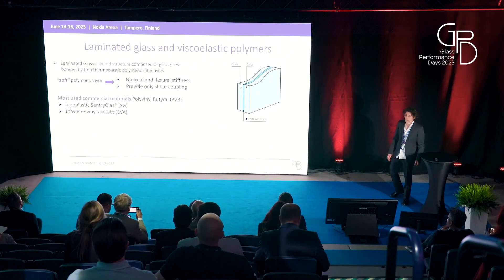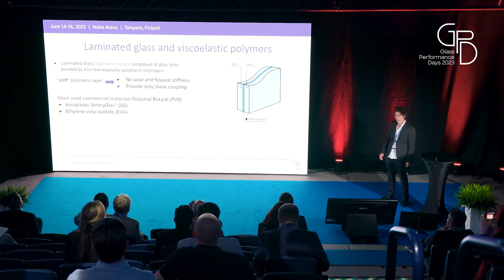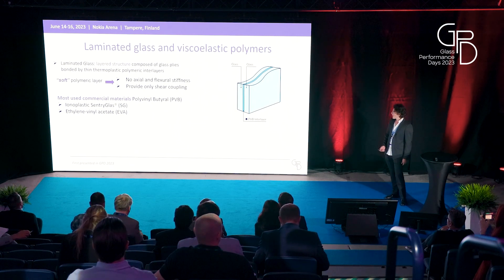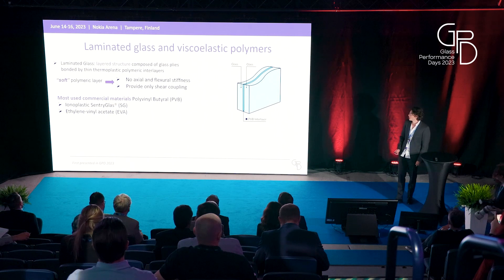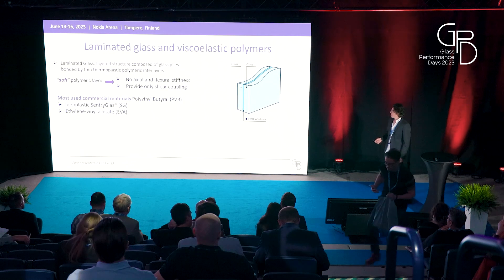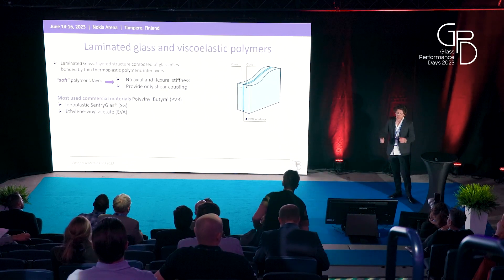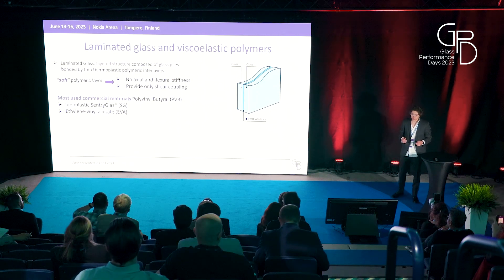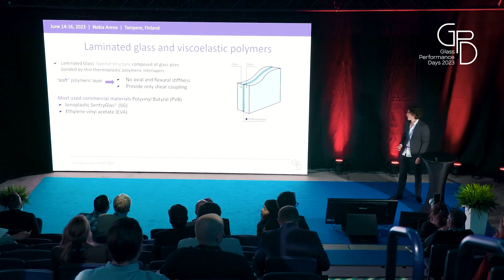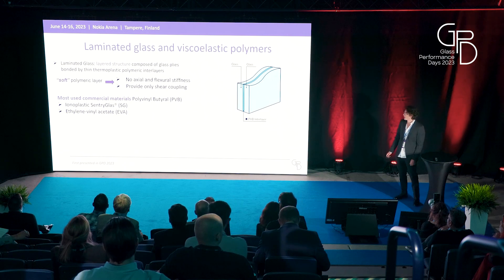As you all know, laminated glass is a structure composed by two or more glass plies bonded together by a polymeric interlayer. In this study, the polymeric interlayer is supposed to be soft — meaning that no axial or flexural stiffness is considered, and the interlayer can only provide shear coupling between the glass plies. The most used polymeric interlayers are PVB, SG, and EVA.